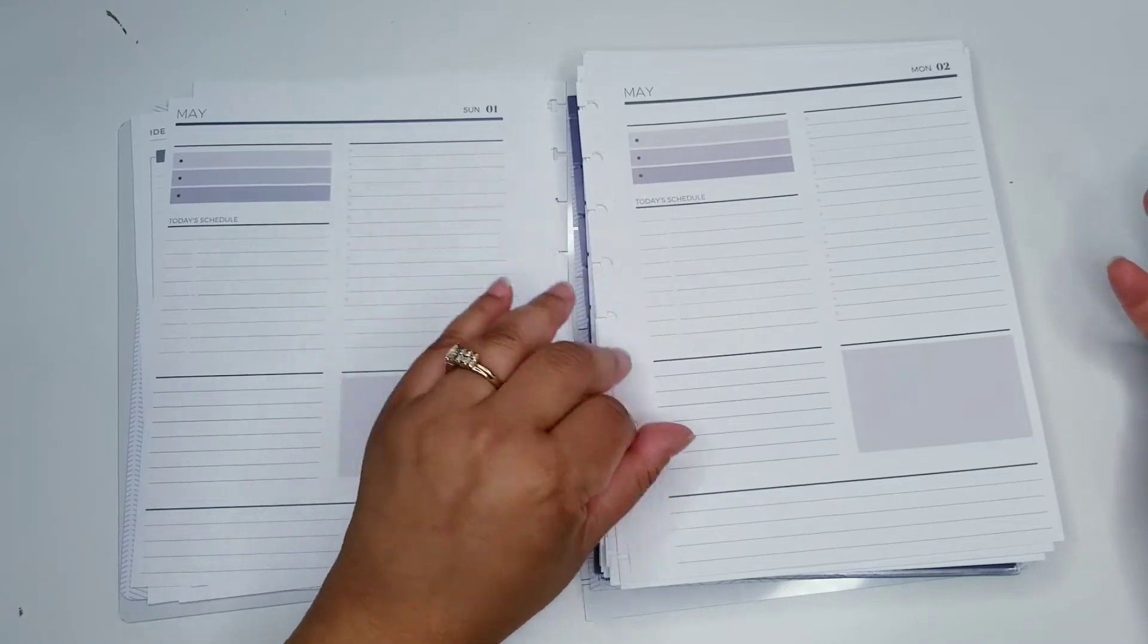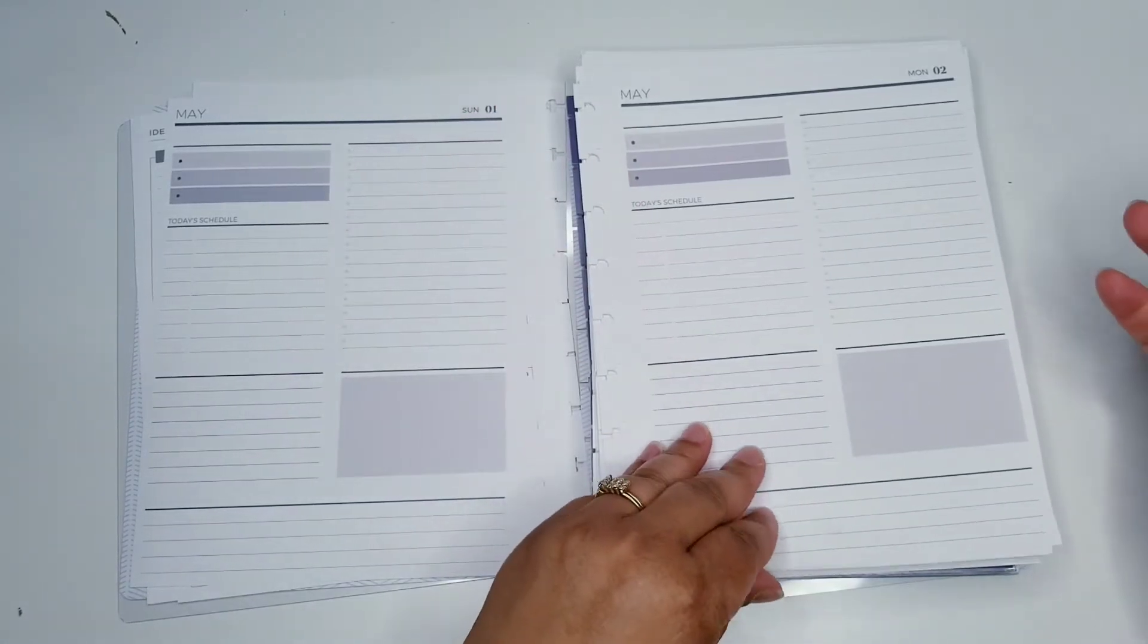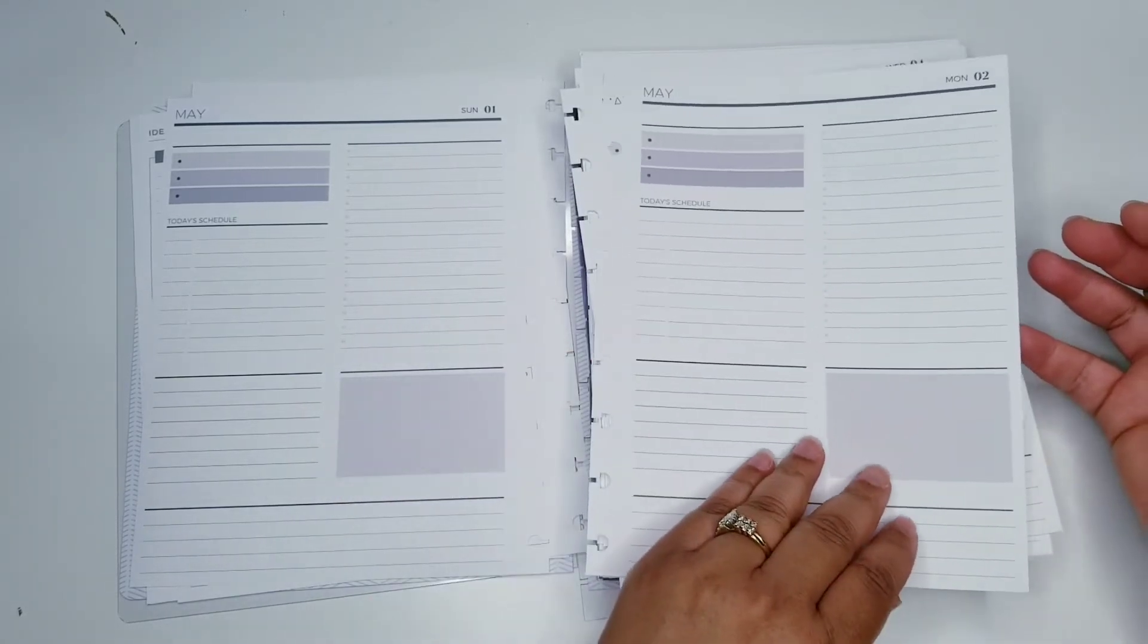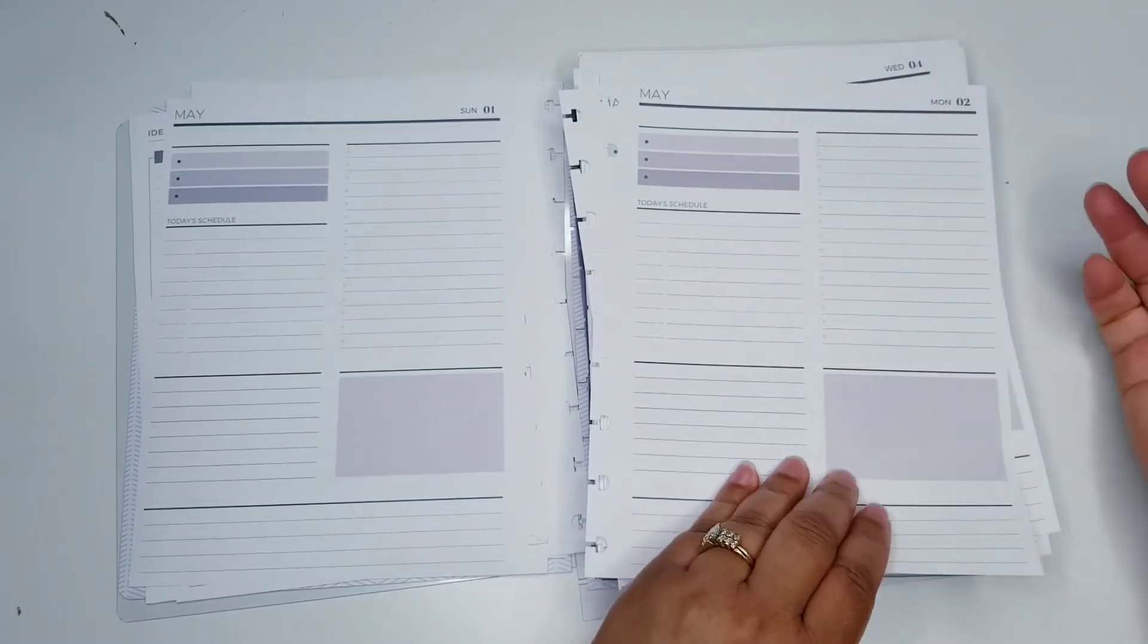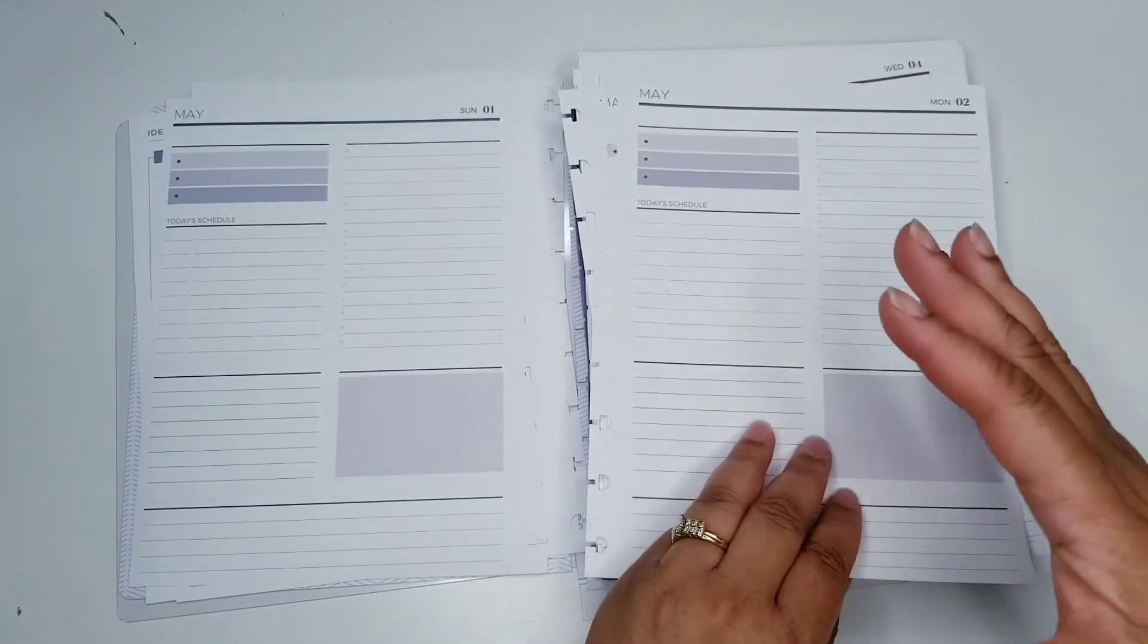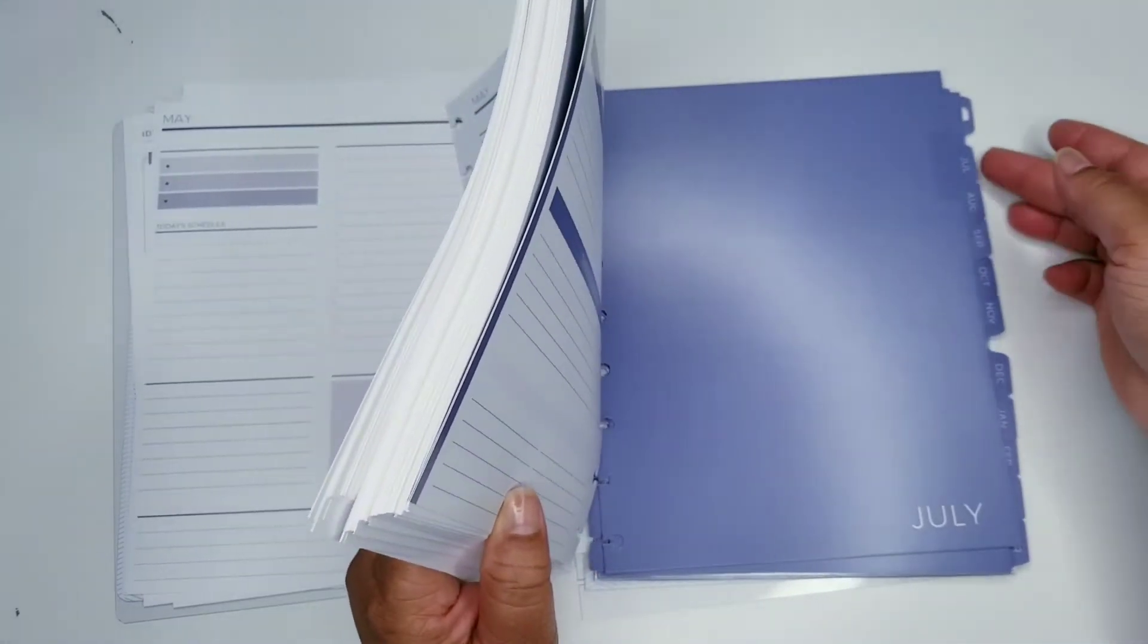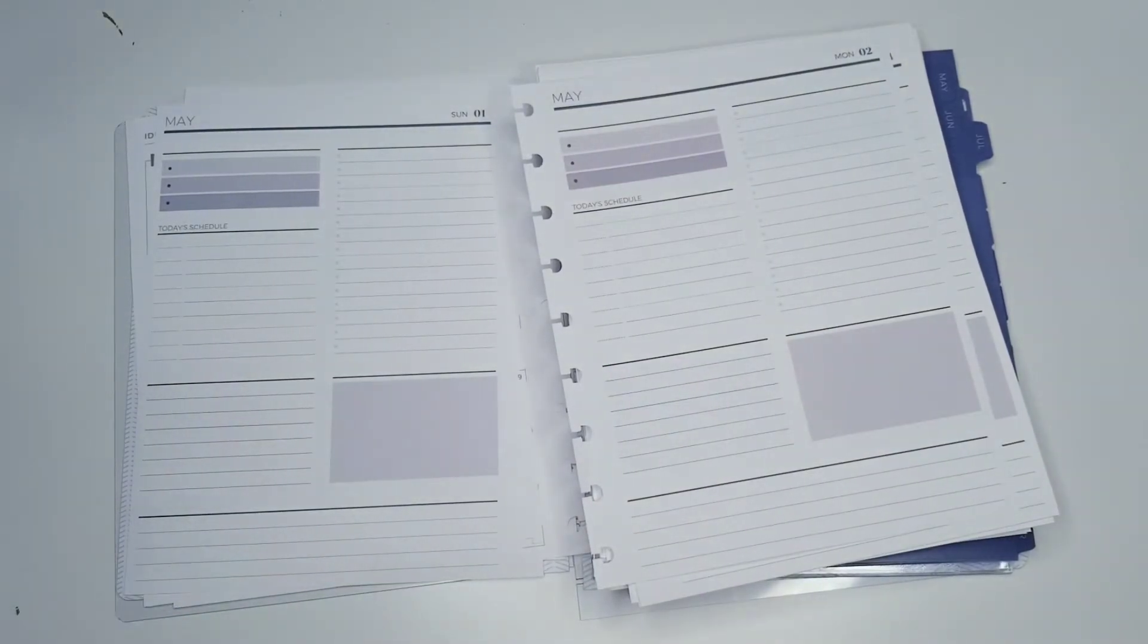I might put a box here. Just something different. Notes under here or notes here. To-dos here. Affirmations here. My top priority is here. So, it just depends. I wanted a neutral flow. So, basically, I got the same neutral as my other planner. So, that's how the daily looks.